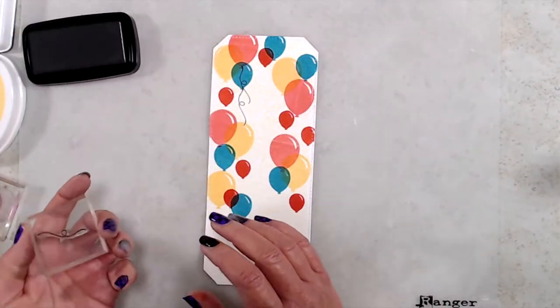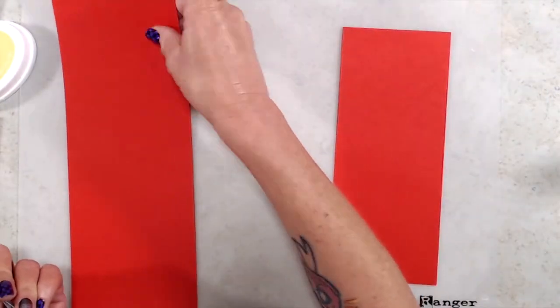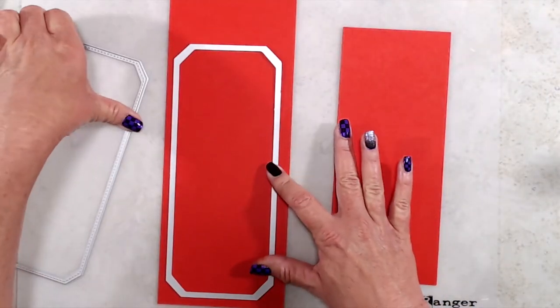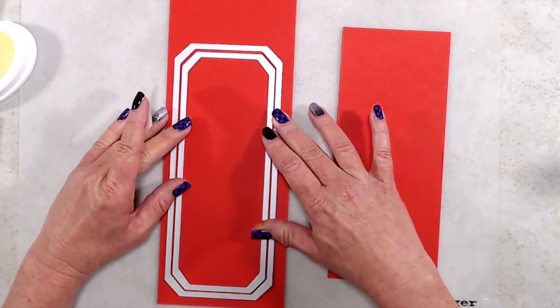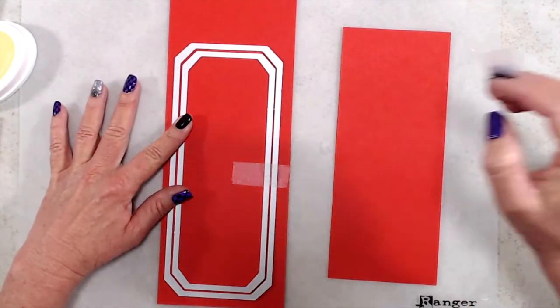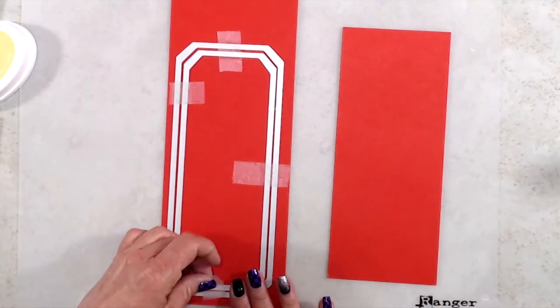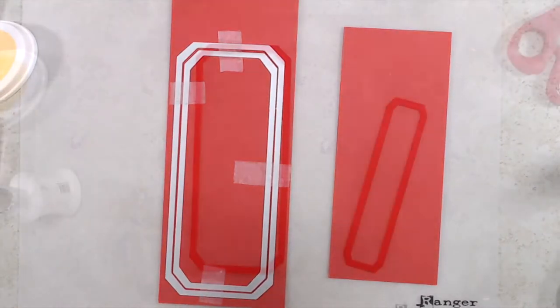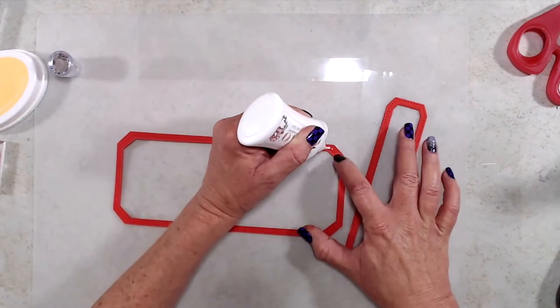Next I needed to create my frames for my shaker card. I used the largest die and the second largest die to cut my main shaker frame. Once I had the dies lined up on my cardstock, I just used Scotch removable tape to hold them in place while I ran them through my die-cutting machine. Then I used the smallest die and the second smallest die to cut a second frame.